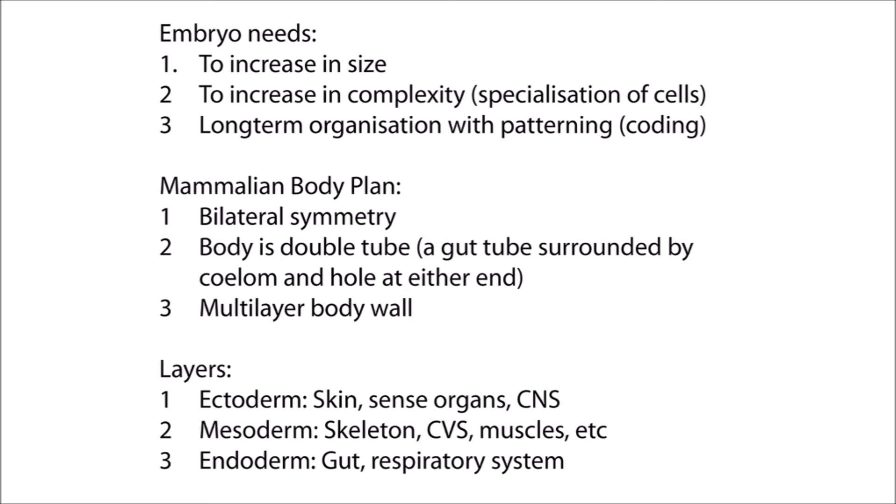It's quite useful to think of the body as a double tube — a gut essentially surrounded by a coelomic cavity, with a hole at either end. The development of the multi-layer of the body wall is of course a complex issue, which we'll try to make clear. But these layers essentially are of ectoderm, which is skin and the sense organs and the central nervous system, and then mesoderm, which is the skeleton, the cardiovascular system, the muscles, etc. And then the endoderm, which lines the gut and the respiratory system.